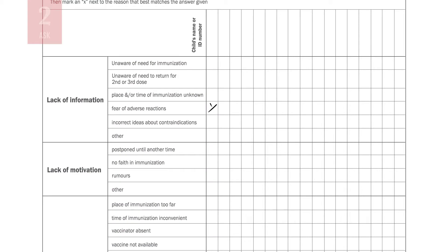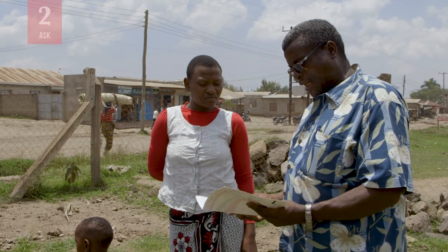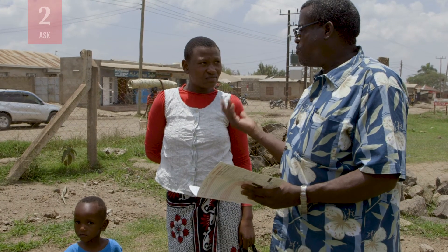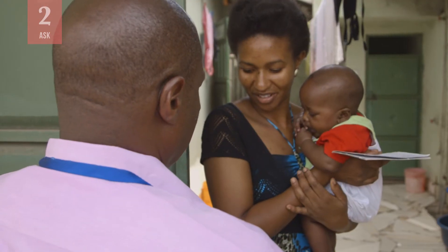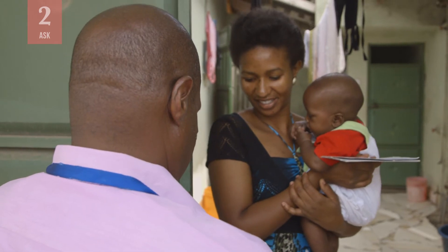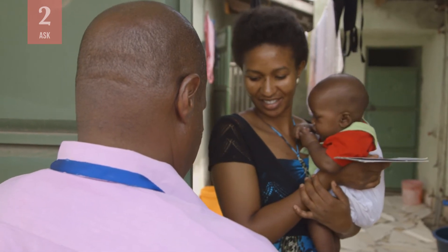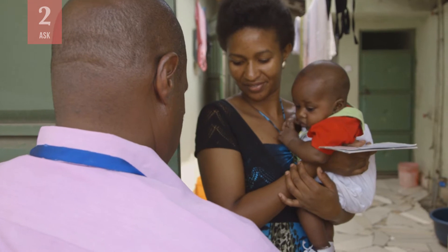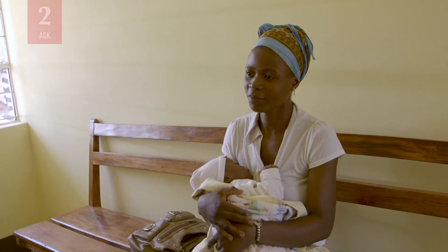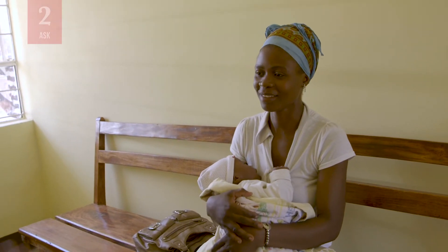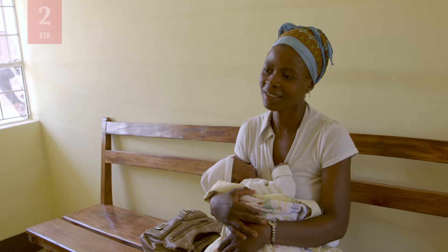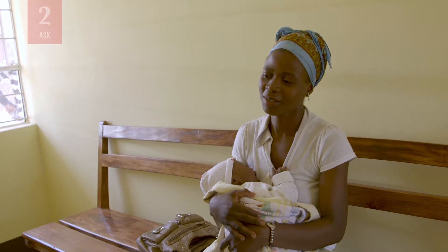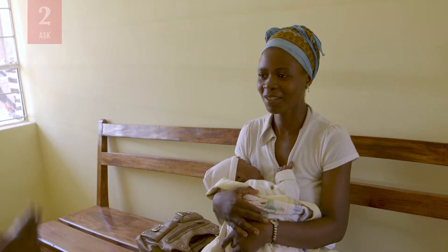Mark an X next to the reason that best matches the answer given. You may need to ask follow-up questions to understand issues from the caregiver's point of view. For example, when a caregiver says she is too busy, find out whether she may be able to attend sessions at specific times, or whether there are additional problems such as cancelled sessions that discourage people from going to the next one.